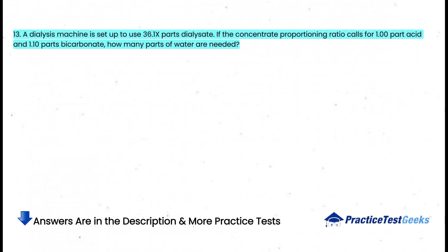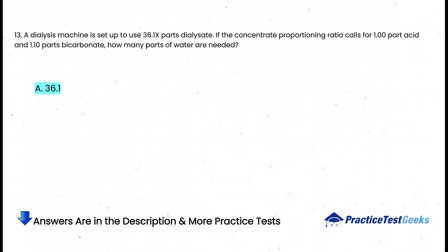A dialysis machine is set up to use 36.1 parts dialysate. If the concentrate proportioning ratio calls for 1.00 part acid and 1.10 parts bicarbonate, how many parts of water are needed? a. 36.1, b. 34.0, c. 31.9, d. 33.0.